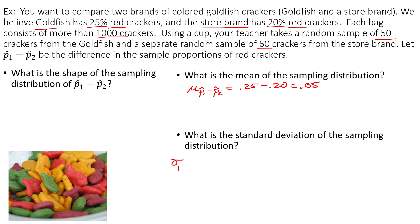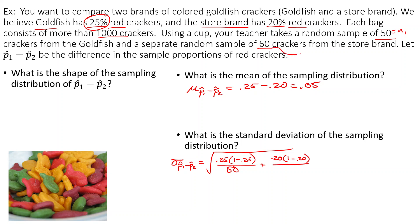The standard deviation of the difference for the sampling distribution would be the square root of P1 times (1 minus P1) over N1, plus P2 times (1 minus P2) over N2. So that's the square root of 0.25 times 0.75 over 50, plus 0.20 times 0.80 over 60. We just throw that in our calculator. On the AP exam, they'll often leave it in formula form, so it's better to know the formula.